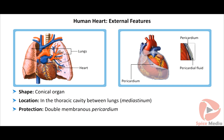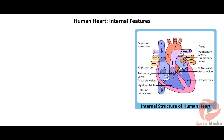The heart is present in the thoracic cavity between the lungs and mediastinum. It is protected by a double membranous structure called the pericardium. The space between the two membranes of the pericardium is filled with pericardial fluid, which protects the heart from external jerk. The human heart is internally divided into four chambers.